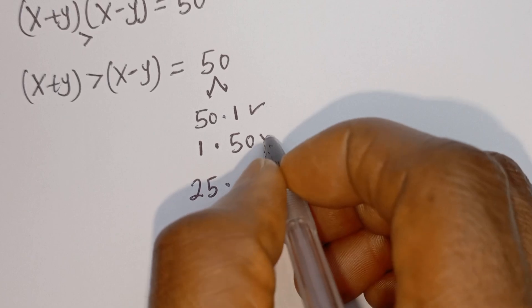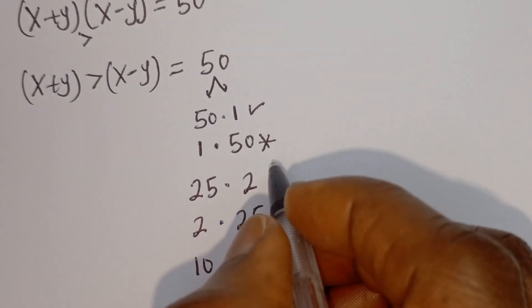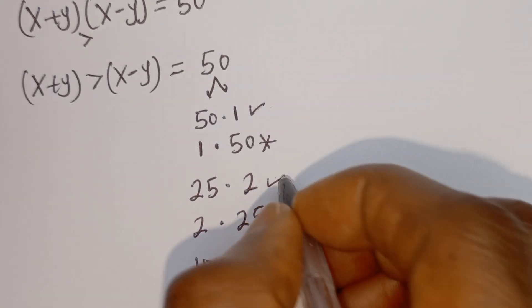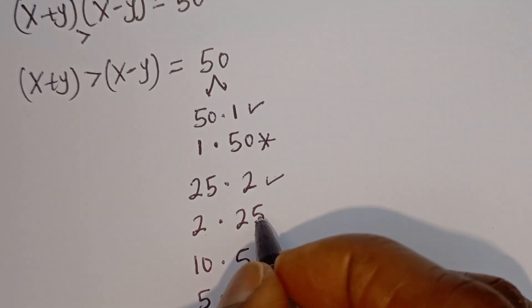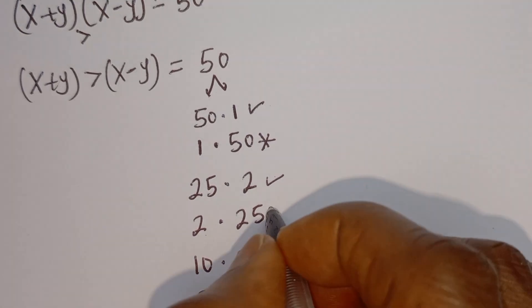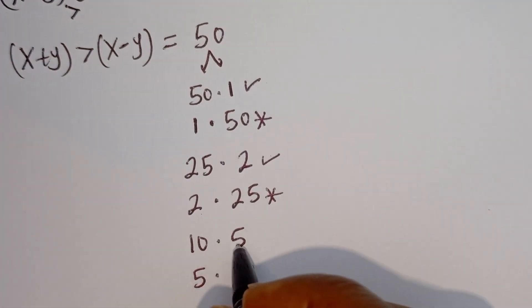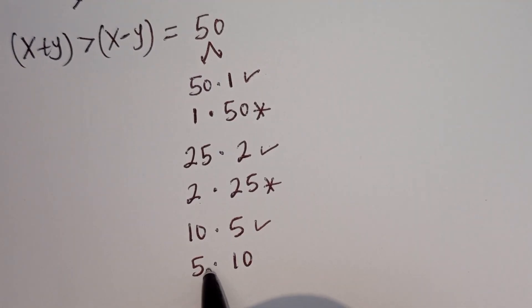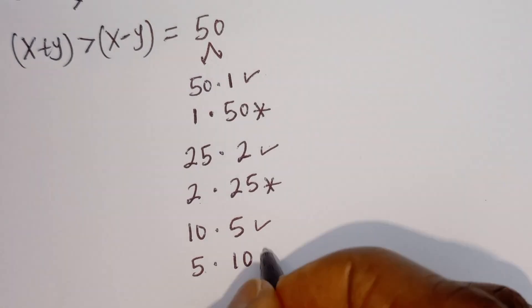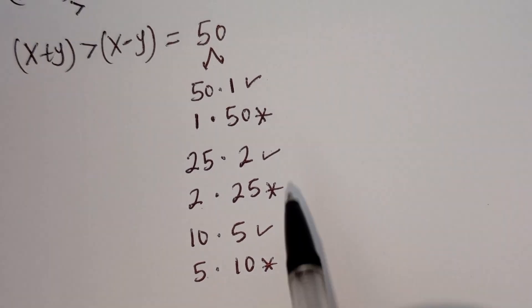1 is less than 50 — this is rejected. 25 is greater than 2 — this is accepted. 2 is less than 25 — this is rejected. And 10 is greater than 5 — this is accepted. 5 is less than 10 — this is rejected. So we have three valid cases.